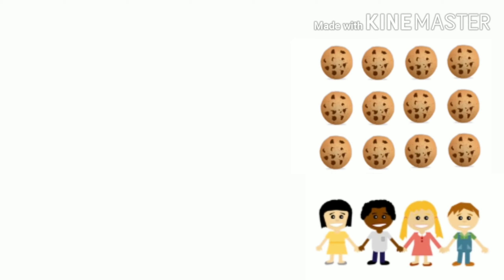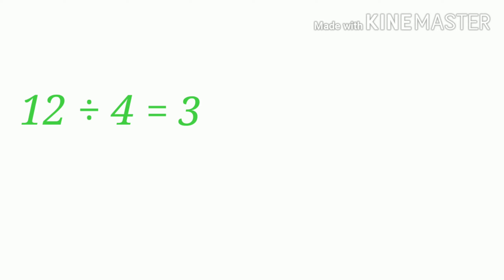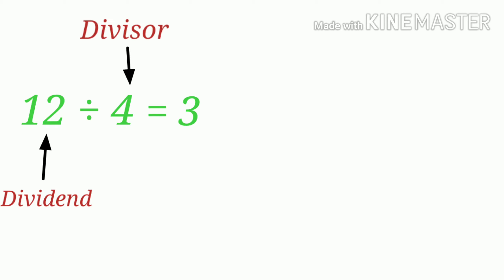To get the answer, you must divide the cookies 4 ways. 12 divided by 4 is equal to 3. That means each person should get 3 cookies. Each of the 3 numbers in a division problem have a special name. The number being divided is called the dividend. The number that the dividend is divided by is called the divisor. And the result of the division is called the quotient.